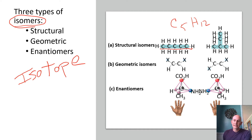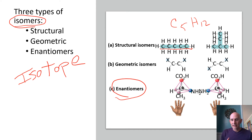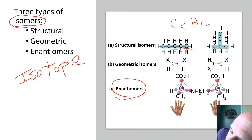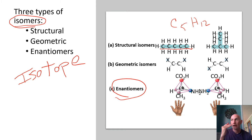Another type of isomer are enantiomers. Enantiomers have the same chemical formula and appear to be put together the same way, but they are actually mirror images of each other — just like your hands. Your hands are not identical; you cannot overlay them. This is specifically important because many compounds have these mirror images, and some of them are biologically active while some are not.